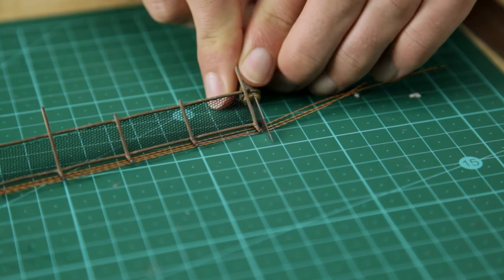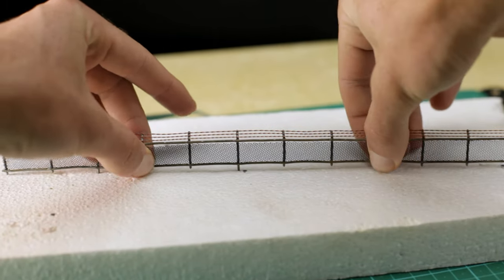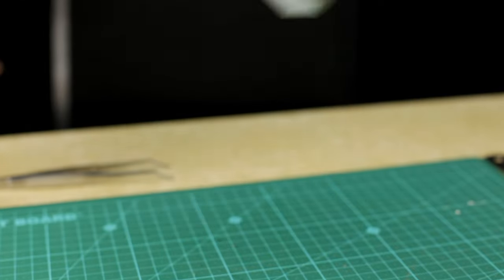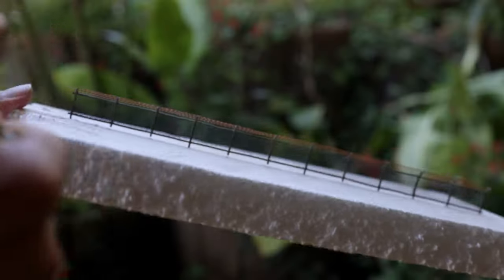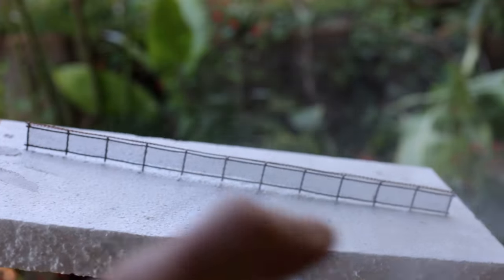Now cut off the excess wire and we are ready to start painting. I'm giving the fence a base coat of this silver paint. Just make sure you give it a really light coat to avoid filling in the holes of the nylon tulle.